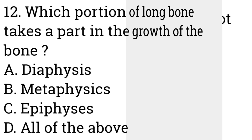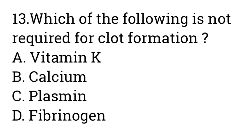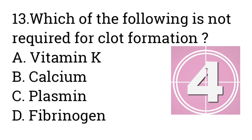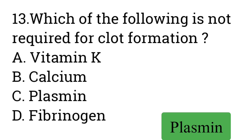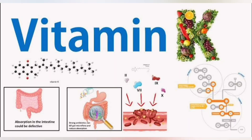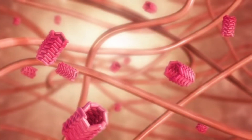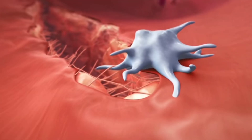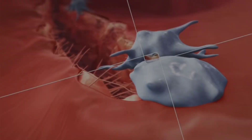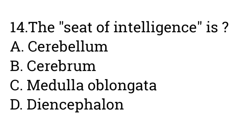Question number thirteen: Which of the following is NOT required for clot formation? Option A: Vitamin K, B: Calcium, C: Plasmin, D: Fibrinogen. Answer is Plasmin. Vitamin K helps make proteins needed for blood clotting, such as prothrombin. Calcium also plays a major role in blood coagulation. Therefore, the answer is Plasmin, which is not required for clot formation.